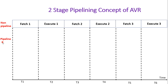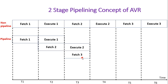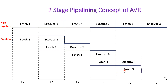In pipelining architecture, supported by AVR microcontroller, in T1 it fetches the first instruction. In T2 it executes the first instruction, and at the same time it also fetches instruction number 2 — so microcontroller time is saved and the CPU is used more efficiently. In T3 it executes instruction number 2 (fetched in T2), and simultaneously fetches the third instruction. Then execution of the third instruction, fetching of the fourth, execution of the fourth, fetching and execution of the fifth, and so on.